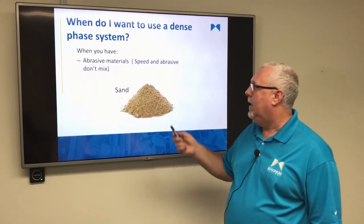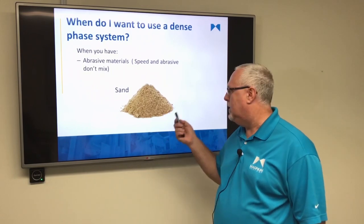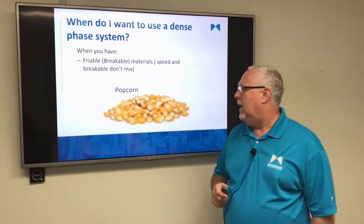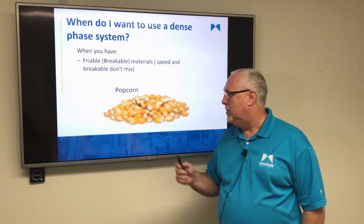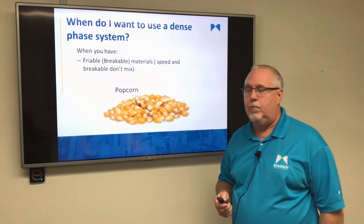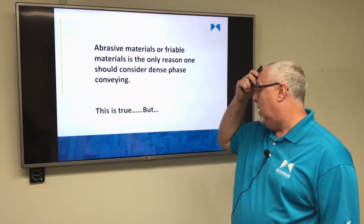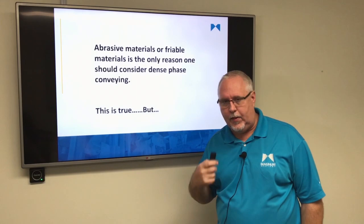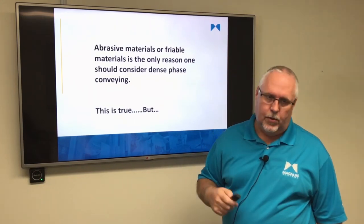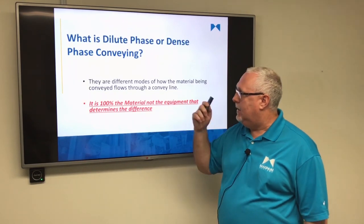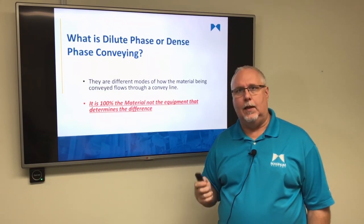Dense phase, however, has a different category. If you have an abrasive material, speed and abrasive things don't go well together — sand is a good example. Another example is popcorn: we do not want to scuff or crack any of the kernels. As long as you can move popcorn dense phase, you won't damage any of it. Put popcorn in a dilute phase system and you have popcorn meal — an undesirable quality. A lot of times when people think dense phase, they say I've got an abrasive or friable material, so I should go dense phase. True, but it's 100% the material, not the equipment, that allows you to make that choice.